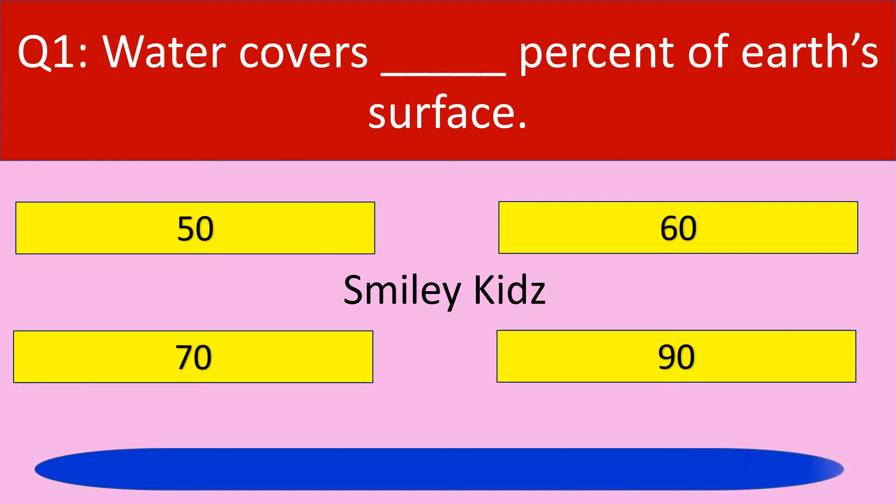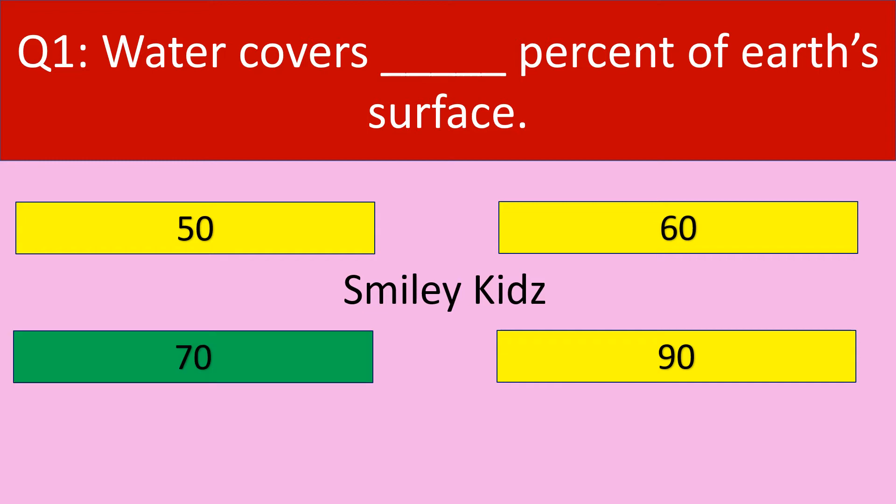Your time is up and the correct answer is 70. Water covers 70% of Earth's surface.